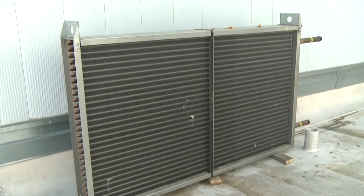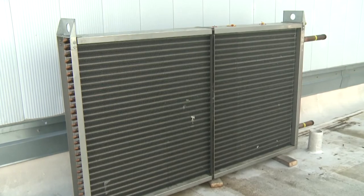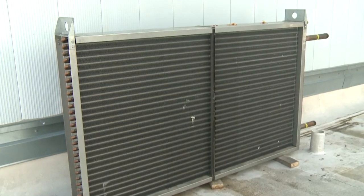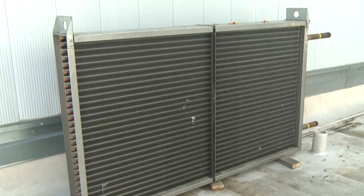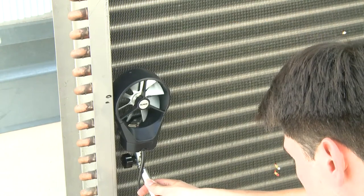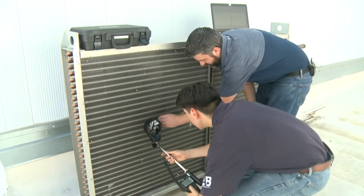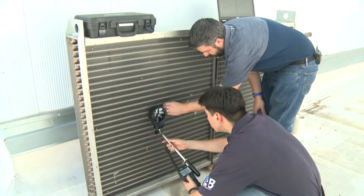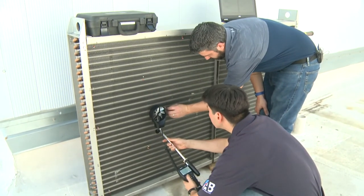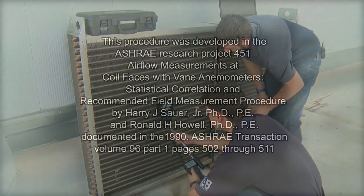The coil traverse data with rotating vane method was developed to measure airflow at coil faces using a vane anemometer. The method can be used on any coil, provided there is no moisture carryover.